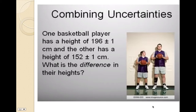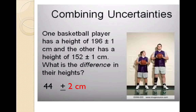We have two basketball players here — one whose height is 196 plus or minus 1 centimeter, and the other whose height is 152 plus or minus 1 centimeter. If I were to ask you what the difference in their heights is, taking into account the uncertainty of the measurements, you would supply an answer of 44 plus or minus 2 centimeters.